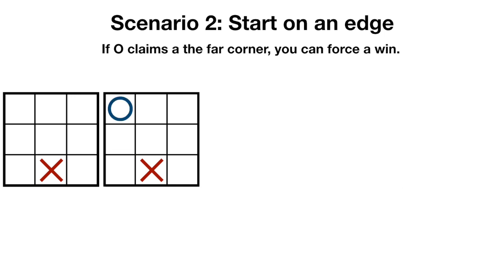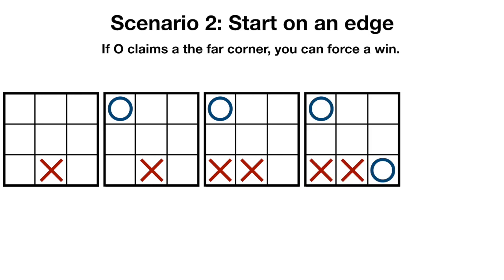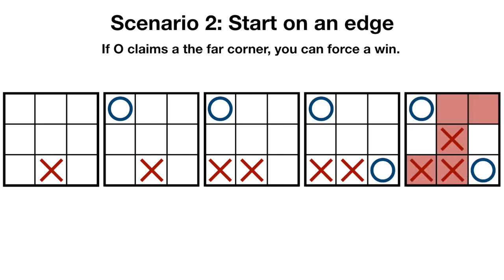To win when O chooses the far corner, x should play in the corner square that is adjacent to x and in the same row or column as O. Once again, O must choose a corner square to block x, and then x creates a double threat for the win.